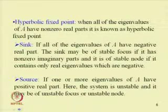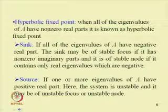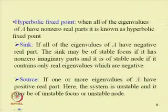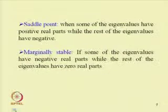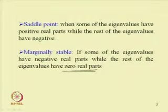We have already discussed the hyperbolic fixed point: when all eigenvalues of the Jacobian matrix have non-zero real parts, it is known as a hyperbolic fixed point. If all eigenvalues of A have negative real parts, it is known as a sink — a stable focus if it has non-zero imaginary parts, or a stable node if it contains only negative real eigenvalues. A source occurs if one or more eigenvalues have positive real parts; the system is unstable and may be an unstable focus or unstable node. A saddle point occurs if some eigenvalues have positive real parts while others have negative real parts. The system is marginally stable if some eigenvalues have negative real parts while the rest have zero real parts.